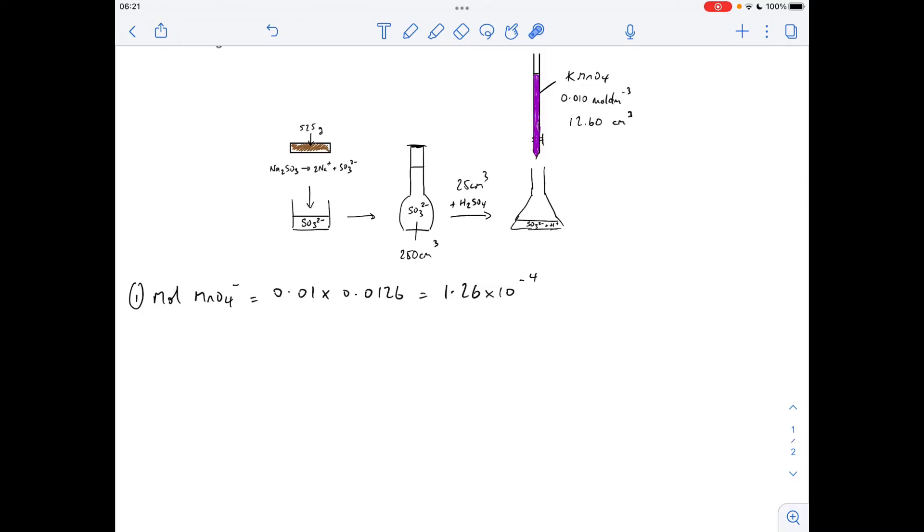So the first thing we'll do is work out the moles of manganate 7 ions that have been used in the titration. Concentration times volume in decimeters cubed, 1.26 times 10 to the minus 4.